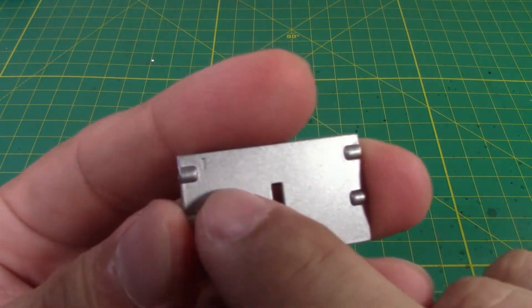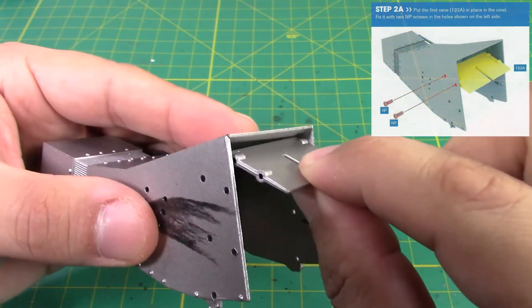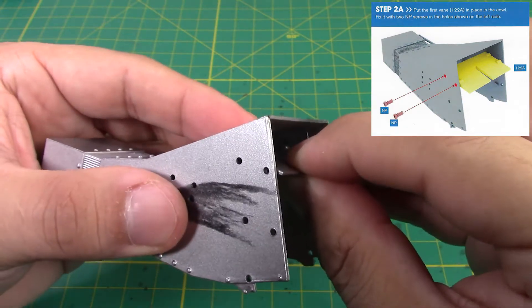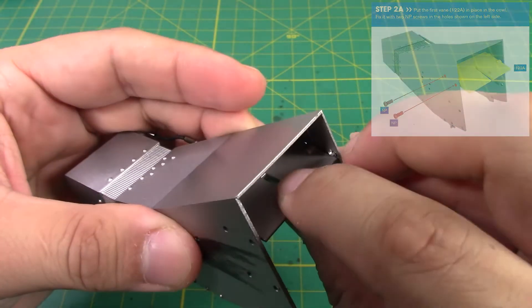And we're going to start with the first vanes, number one, which you can see up here. And it's going to go inside the cowl on the top section here at an angle. And it's going to have some NP screws on each side.